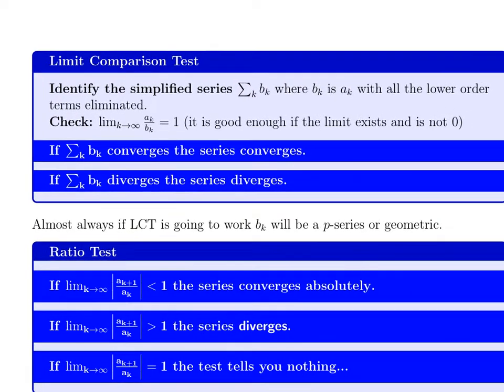So the limit comparison test. First, you take the individual terms a_k, you simplify them by throwing away lower order terms. You keep doing that until you've basically got one term on the top and one term on the bottom. Usually, they cancel out to something really simple, like 1 over k to the p or some number to the k. So usually, the simplified version will look like a p-series or a geometric series, and then you're golden. The check here, the thing you have to check to make sure it works, is that the limit of the ratio a_k over b_k equals one.